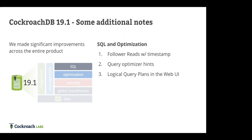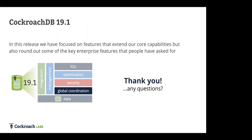There's a longer blog post on our website at cockroachlabs.com about 19.1, listing around 30 features. Our docs and release notes are verbose and descriptive of not just what we've done but how to use these things. We're pushing forward across everything we do to make sure our distributed SQL meets the needs of organizations' most high-value transactional workloads.